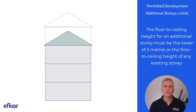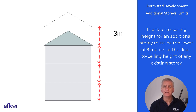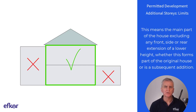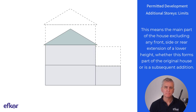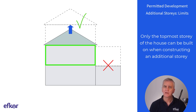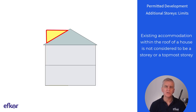The floor-to-ceiling height for an additional story must be the lower of three meters or the floor-to-ceiling height of any existing story. Any additional story can only be built onto the principal part of the house — meaning the main part of the house, excluding any front, side or rear extension of a lower height, whether this forms part of the original house or is a subsequent addition. Only the topmost story of the house can be built on when constructing an additional story. Existing accommodation within the roof of a house is not considered to be a story or a topmost story.